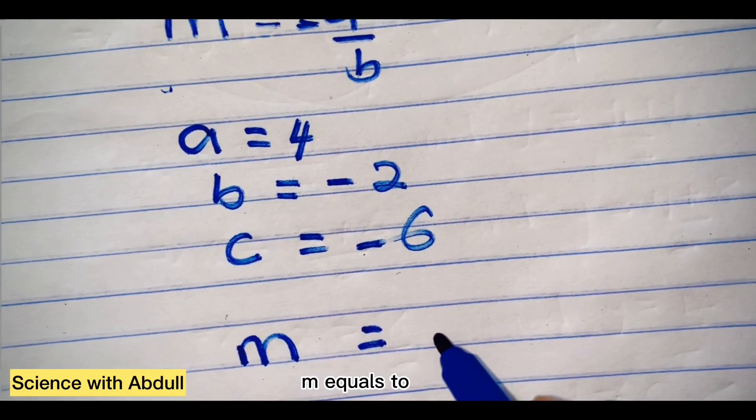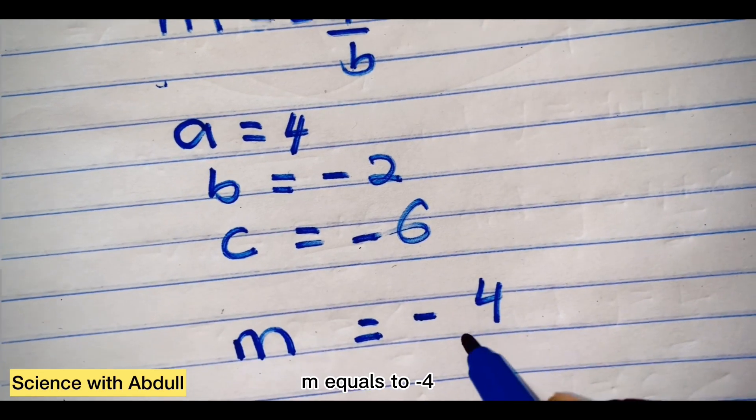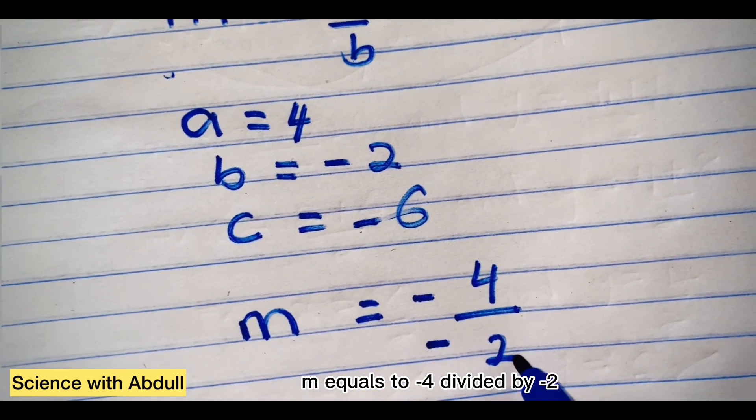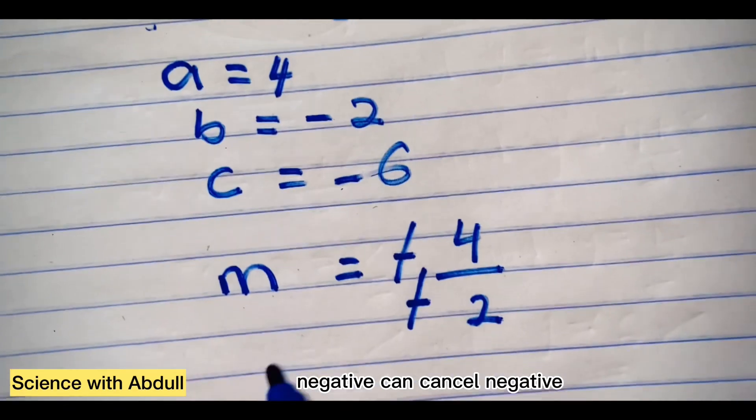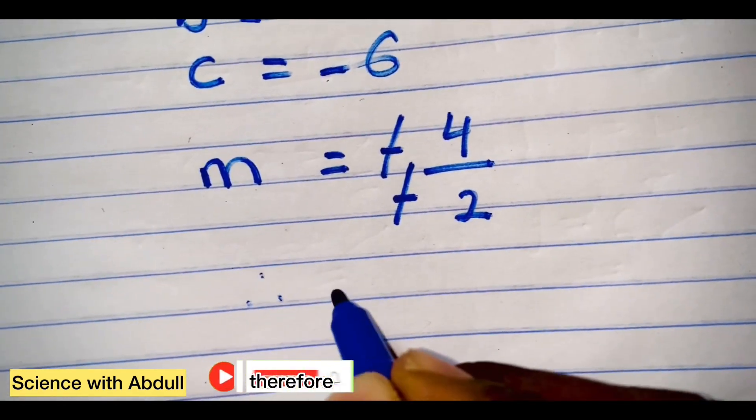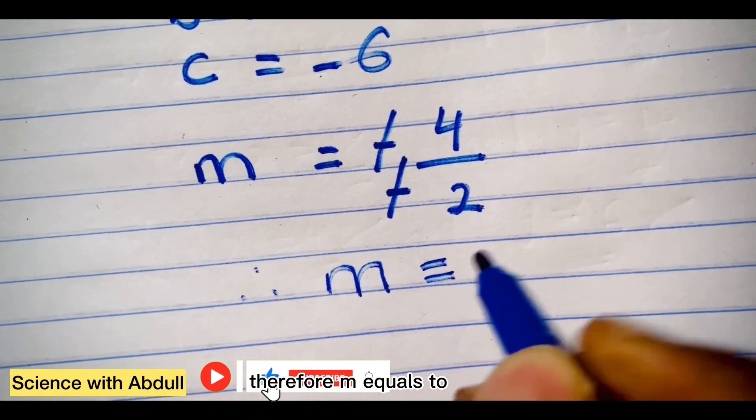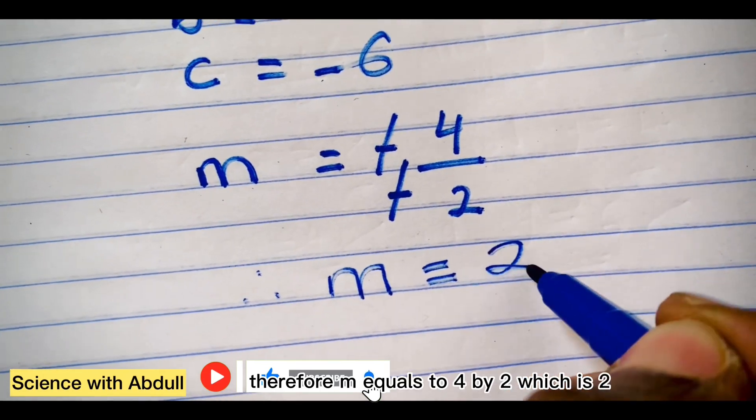m equals to negative 4 divided by negative 2. Negative can cancel negative. Therefore, m equals to 4 by 2, which is 2.